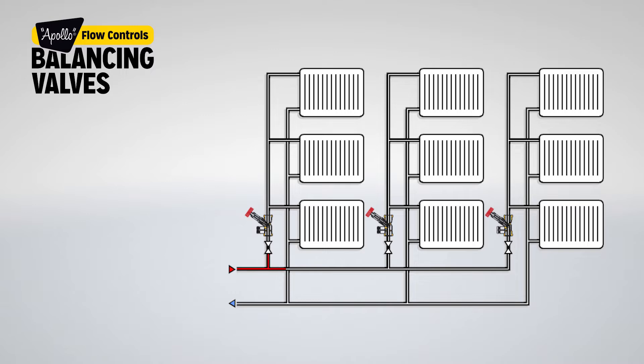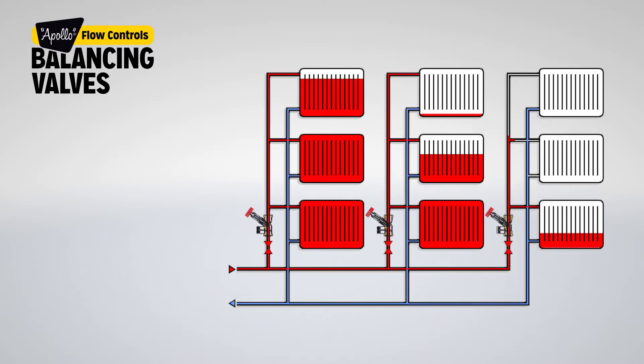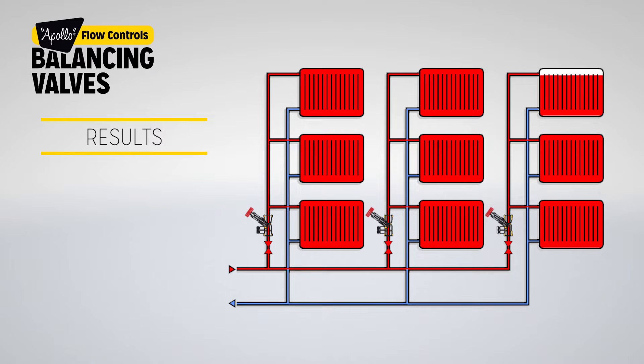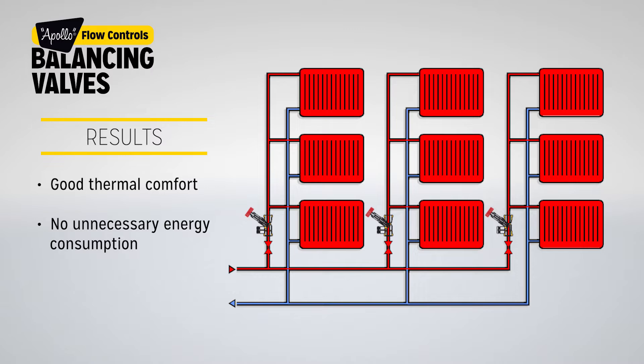When the system is balanced, water flow can be set to design requirements for all parts of the circuit. The results are good thermal comfort since all users receive the required energy, no unnecessary energy consumption, pumps operating with sufficient flow, and heat loss from the piping system especially in uninhabited areas such as basements, hallways, and staircases is minimized. In many cases, noise generation is also avoided.